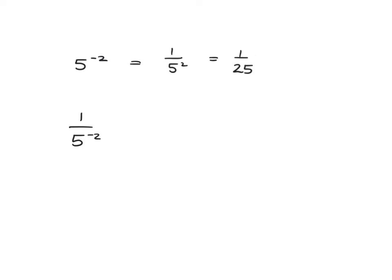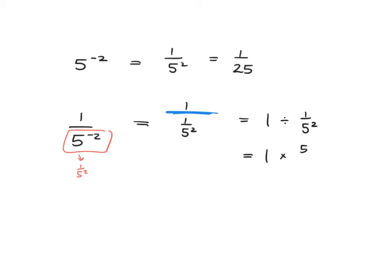Now here's something interesting. What if we've got 1 over 5 to the negative 2? Well, we're still just dealing with the fact that 5 to the negative 2 means 1 over 5 squared, so this is going to become 1 over 1 over 5 squared. The fraction line means division, so you've got 1 divided by 1 over 5 squared. Remembering your division of fractions, you multiply and flip.